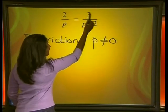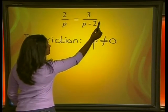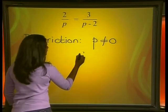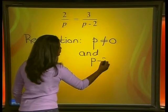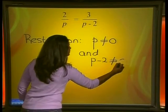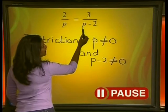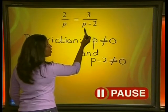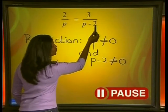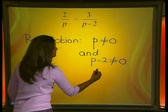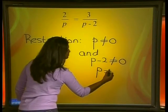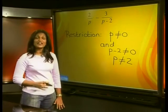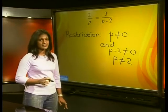On the right hand side we have 3 divided by P minus 2. We know that P minus 2 may not be equal to 0. What value of P makes this denominator equal to 0? The answer is 2, because 2 minus 2 gives me 0. This means that P cannot be equal to 2. Now we know the values of P that are not allowed — let's solve the equation.